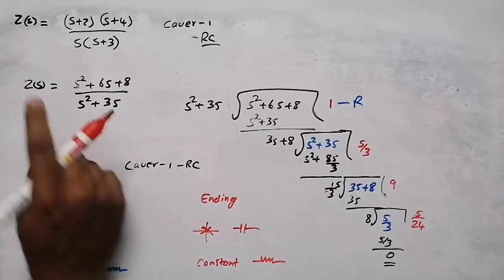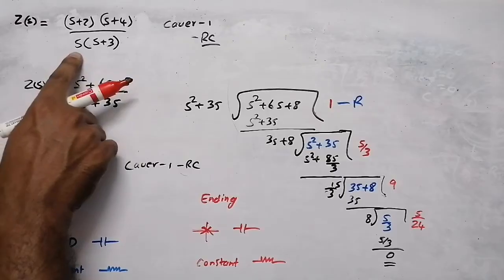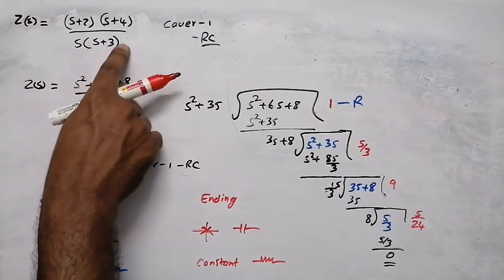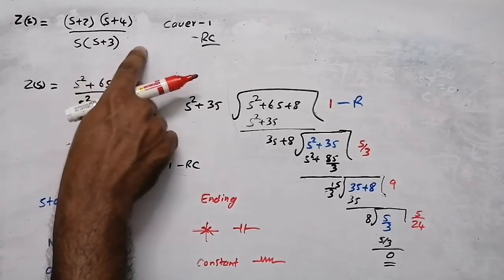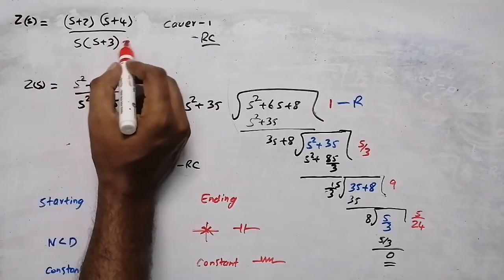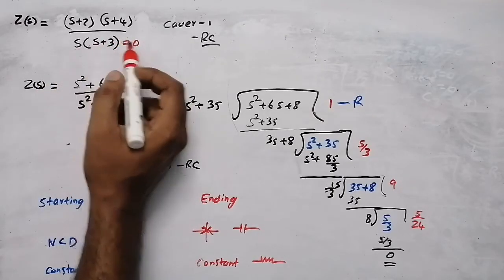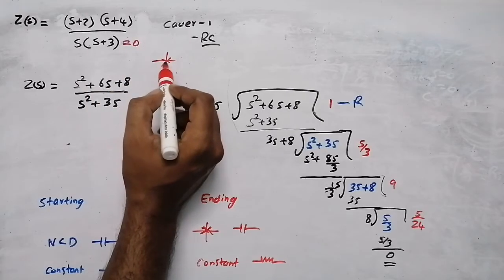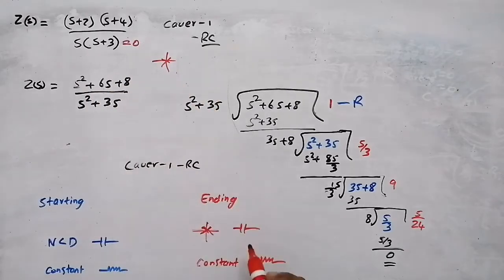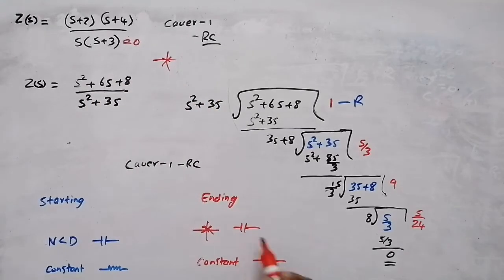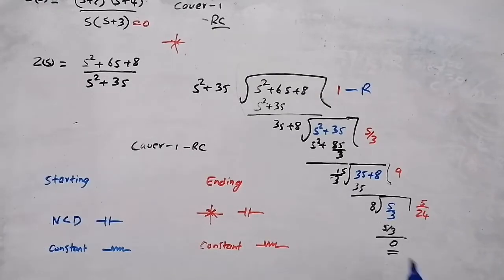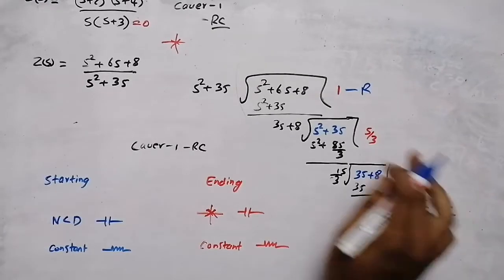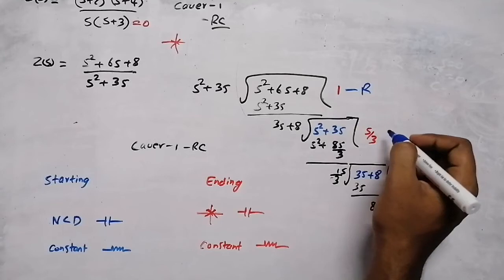In this case, we have a pole at origin. Equating the denominator equal to zero gives s equal to 0, which confirms a pole at origin. Therefore, the ending element will be a capacitor.